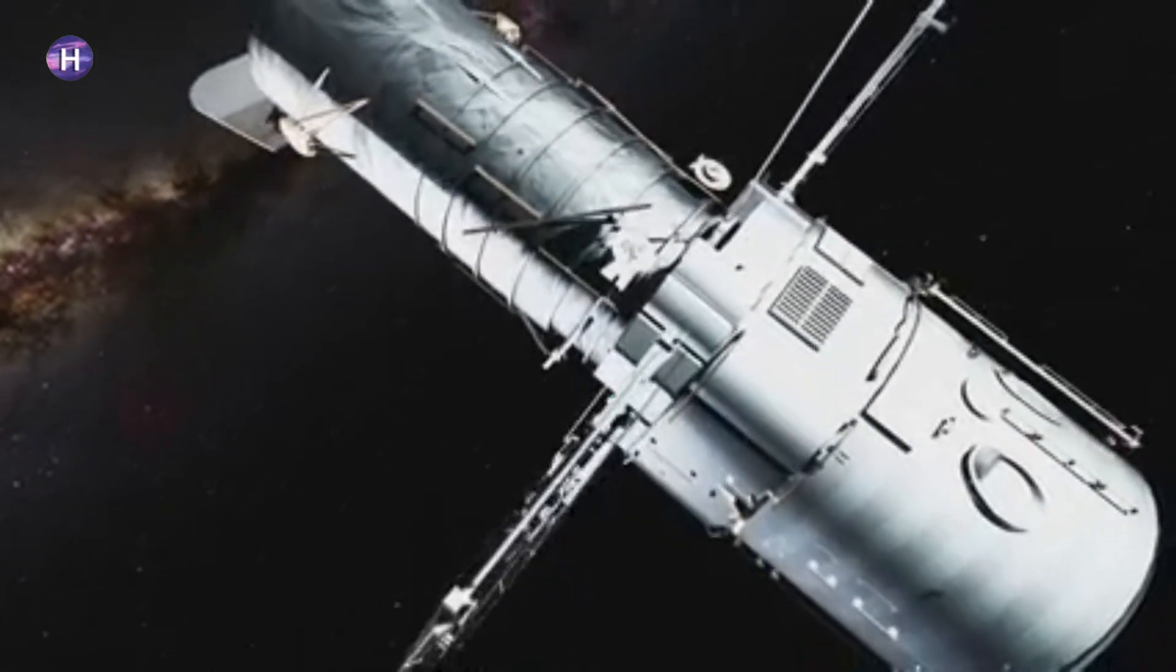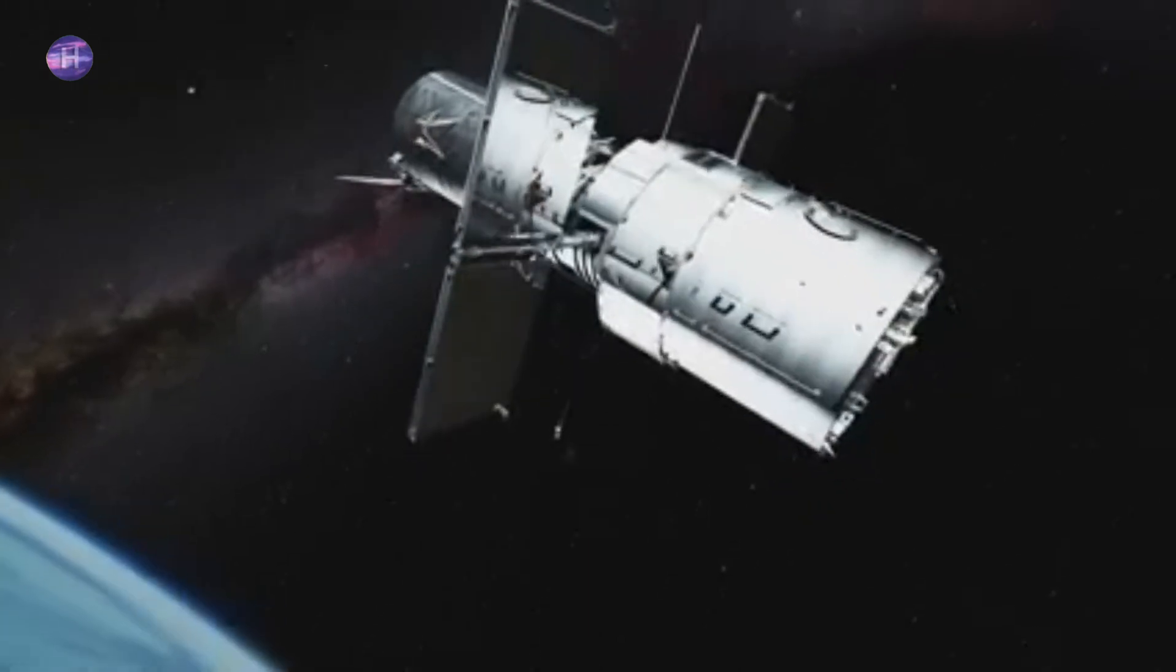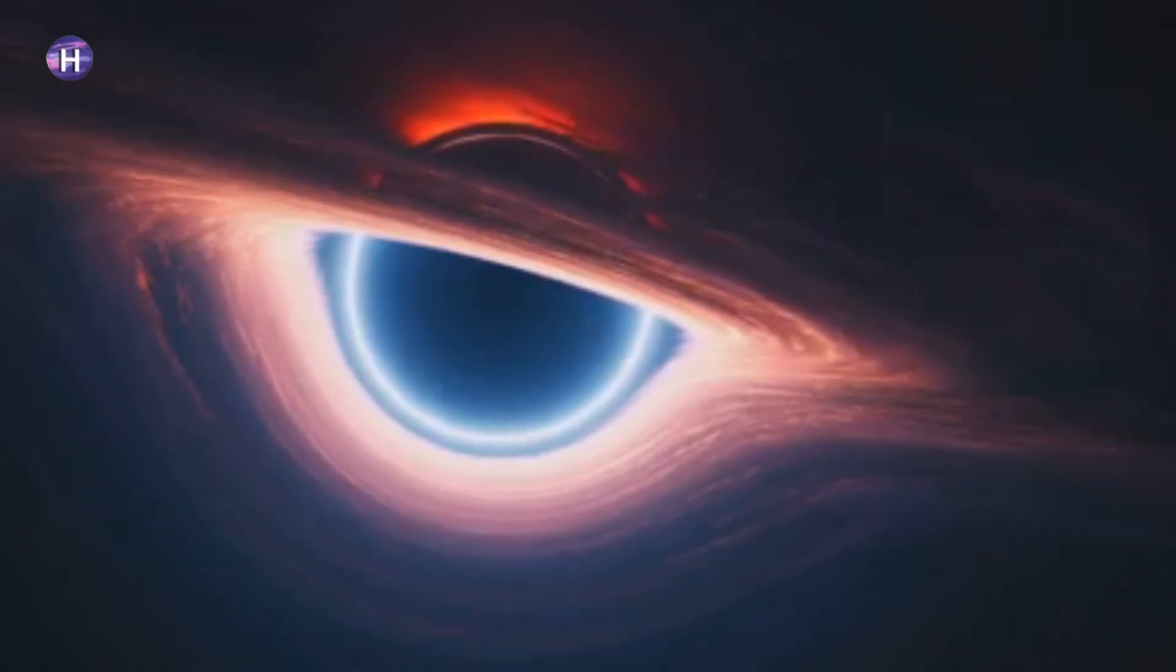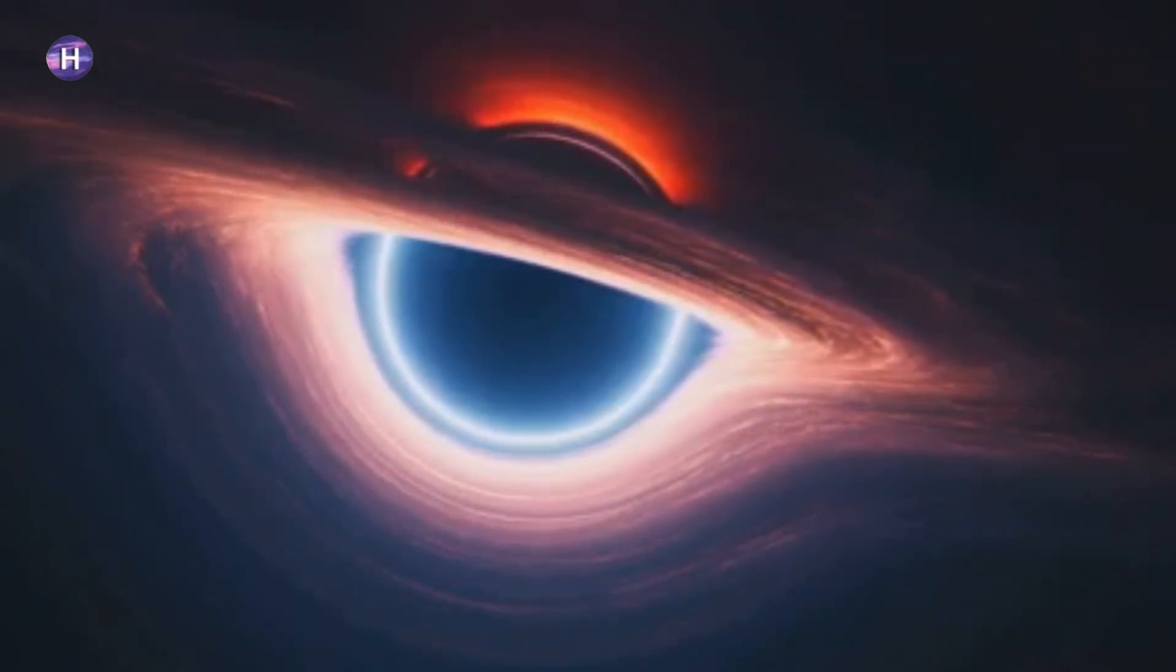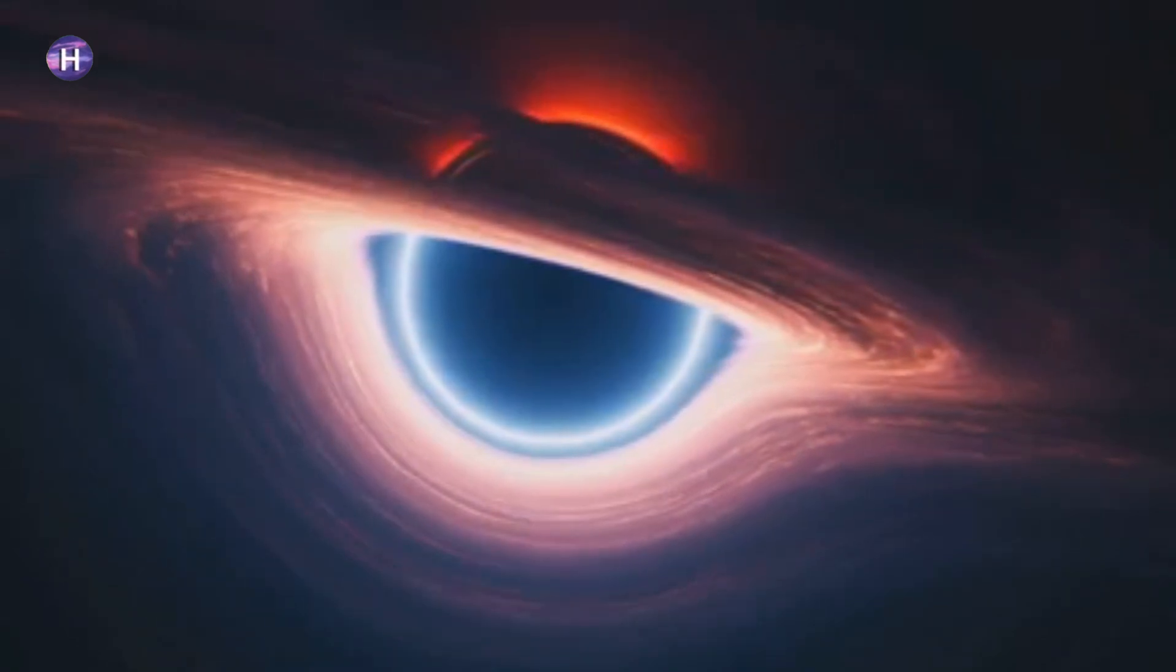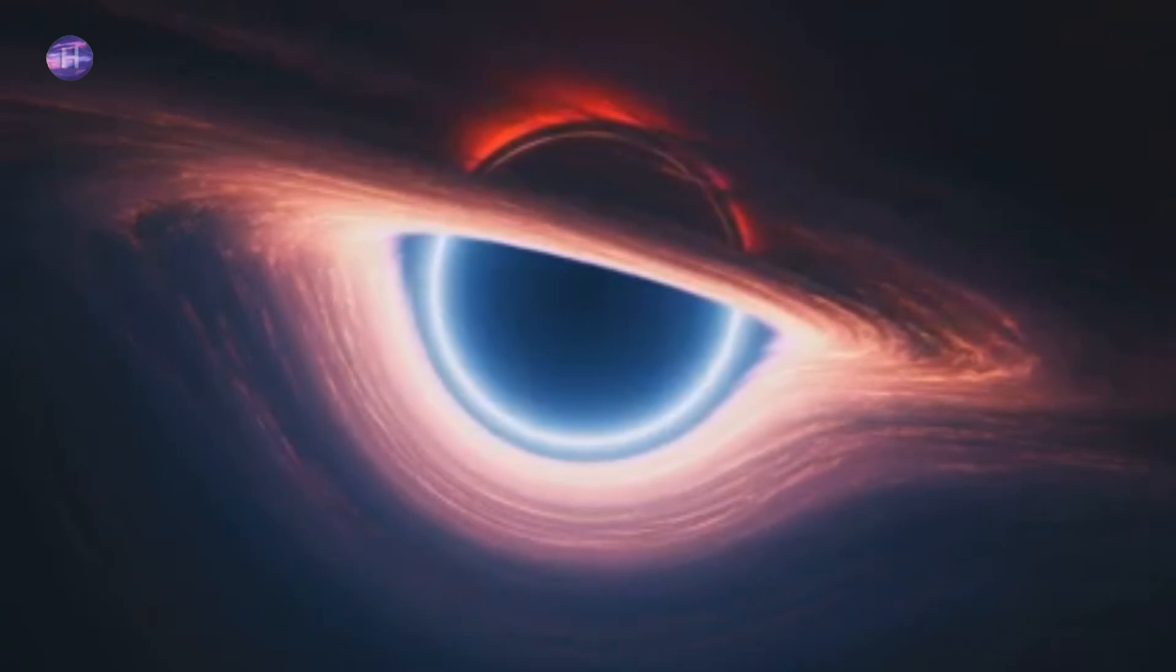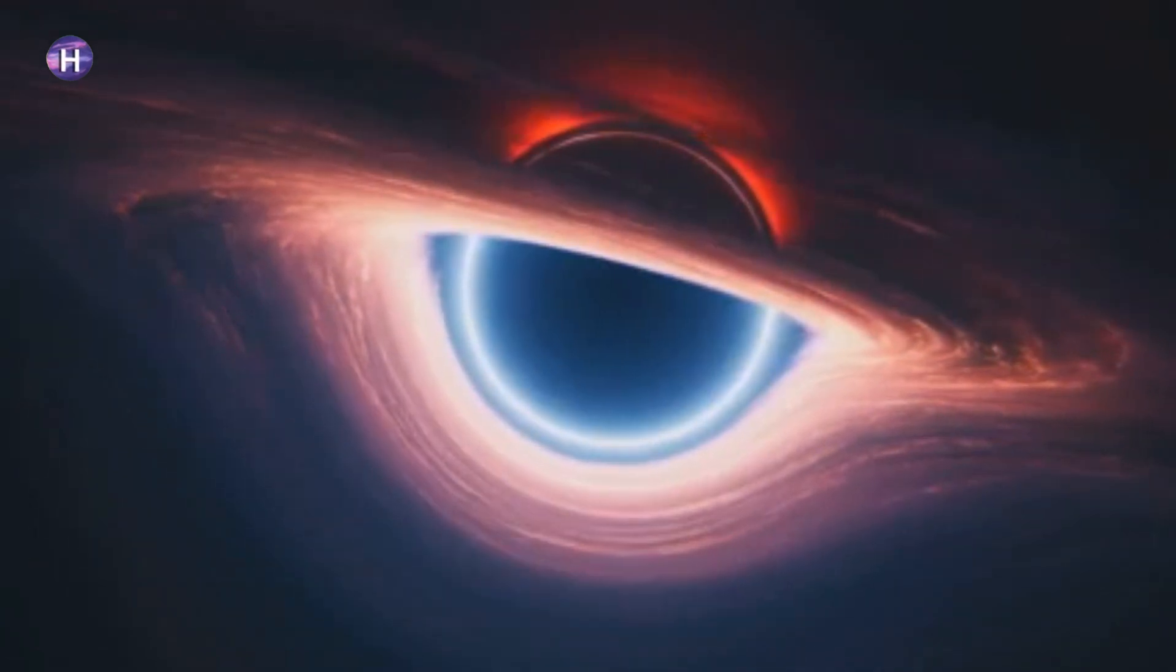Einstein's theory of general relativity predicts how black holes should behave. This theory has been a cornerstone of modern physics for over a century, but there is still much we do not know. By observing black holes, JWST is providing critical tests of Einstein's predictions. These observations could either confirm the theory or reveal new physics that challenges our current understanding.